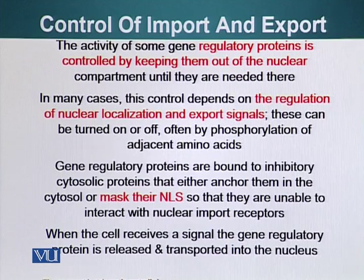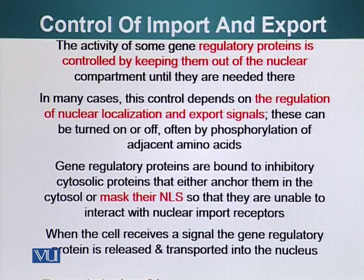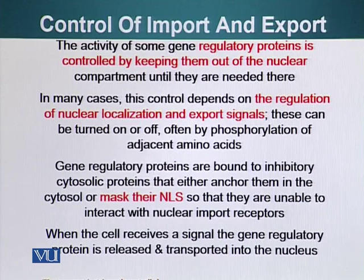In many cases, this control depends upon the regulation of nuclear localization and export signals, which can be turned off and on — for example, by phosphorylation — or it can also have a system to sequester the protein. The gene regulatory protein can be sequestered by other molecules which do not permit it to enter the nucleus, including by masking the NLS. Unless and until that NLS is exposed, these gene regulatory proteins cannot enter the nucleus.